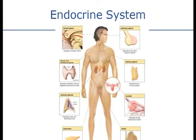The thymus gland located in the neck is responsible for helping develop a strong immune system. The thyroid and parathyroid glands are important for the retention and excretion of calcium. Calcium is a very important electrolyte needed in your body to help muscles contract. Along with sodium, potassium, magnesium, and calcium, these are all very important electrolytes that you must have at certain levels for your muscles — including your heart — to function properly.